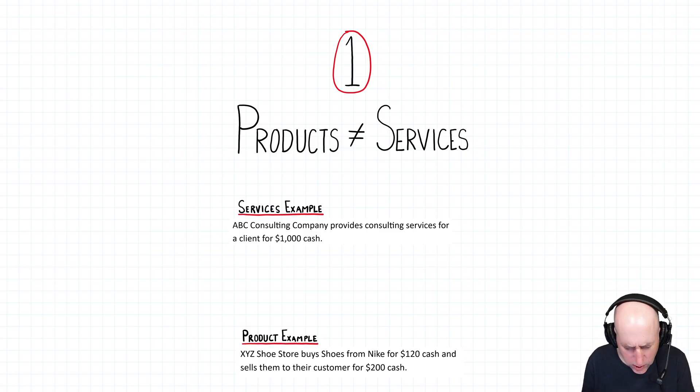So the first thing was products are different from services. So here's a service example. ABC consulting company provides consulting services for a client for $1,000 cash. All right, so we debit cash, we credit consulting revenue for $1,000.